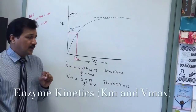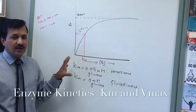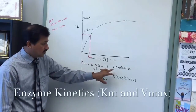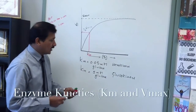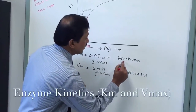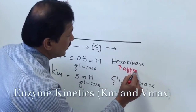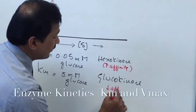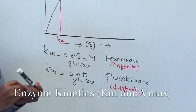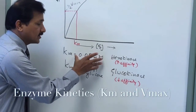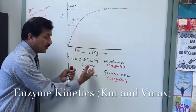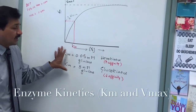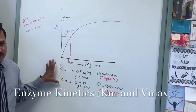This means KM indicates when the enzyme is going to be active. An enzyme with a low KM, like hexokinase, has a higher affinity for glucose, while an enzyme with a high KM has a lower affinity. Hexokinase will be active even when blood glucose is low, whereas glucokinase will be active only when there is plenty of glucose present in the blood.